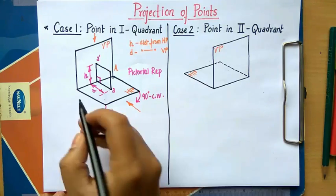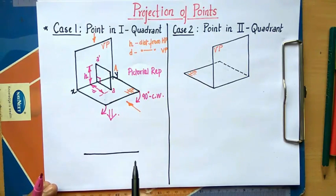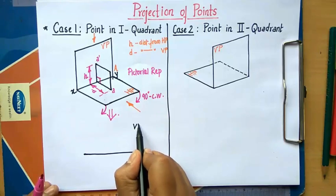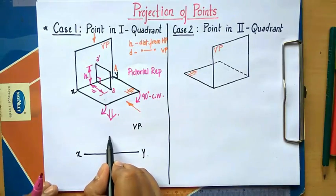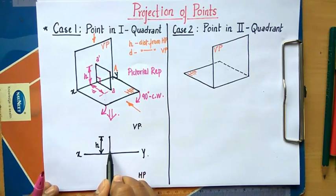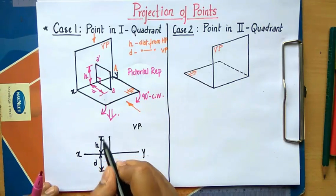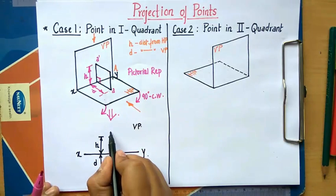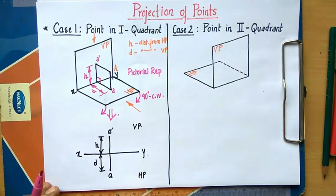We start with the reference line XY. Above this reference line we have the VP, and below it we have the HP. As far as point A' is concerned, it's going to be somewhere here above XY, and this distance is going to be H. We have the projector line, and somewhere down below this we have point A at distance D. Always remember: you need to put a dash with the front view (A'), and no dash with the top view (A).